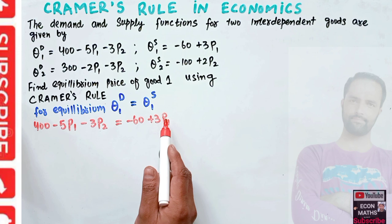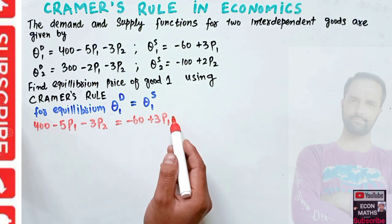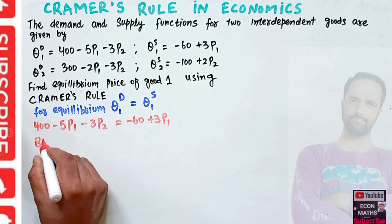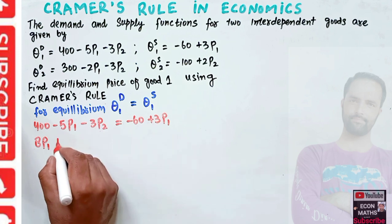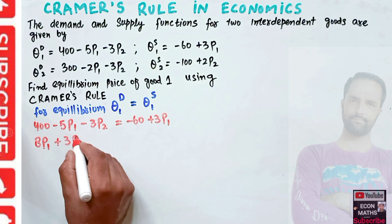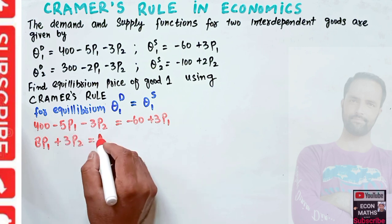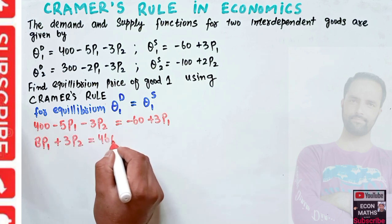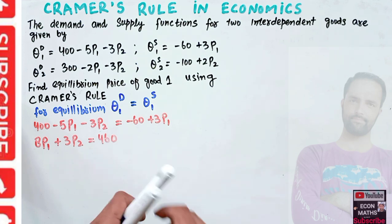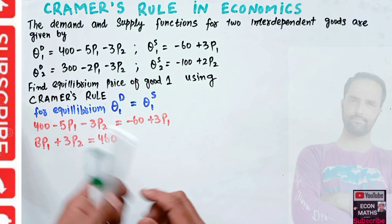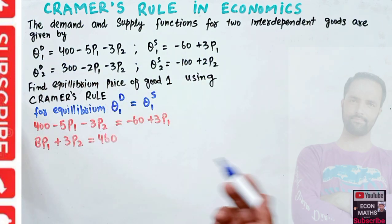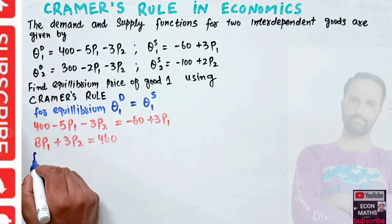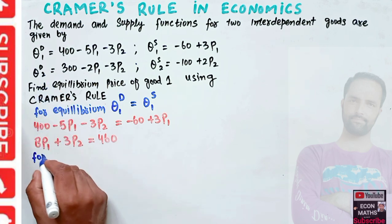Rearranging that equation: transposing 3P1 to the left gives 3 + 5 = 8P1, and transposing −3P2 to the right gives +3P2. Transposing −60 to the right gives 400 + 60 = 460. So the first equilibrium equation is 8P1 + 3P2 = 460.